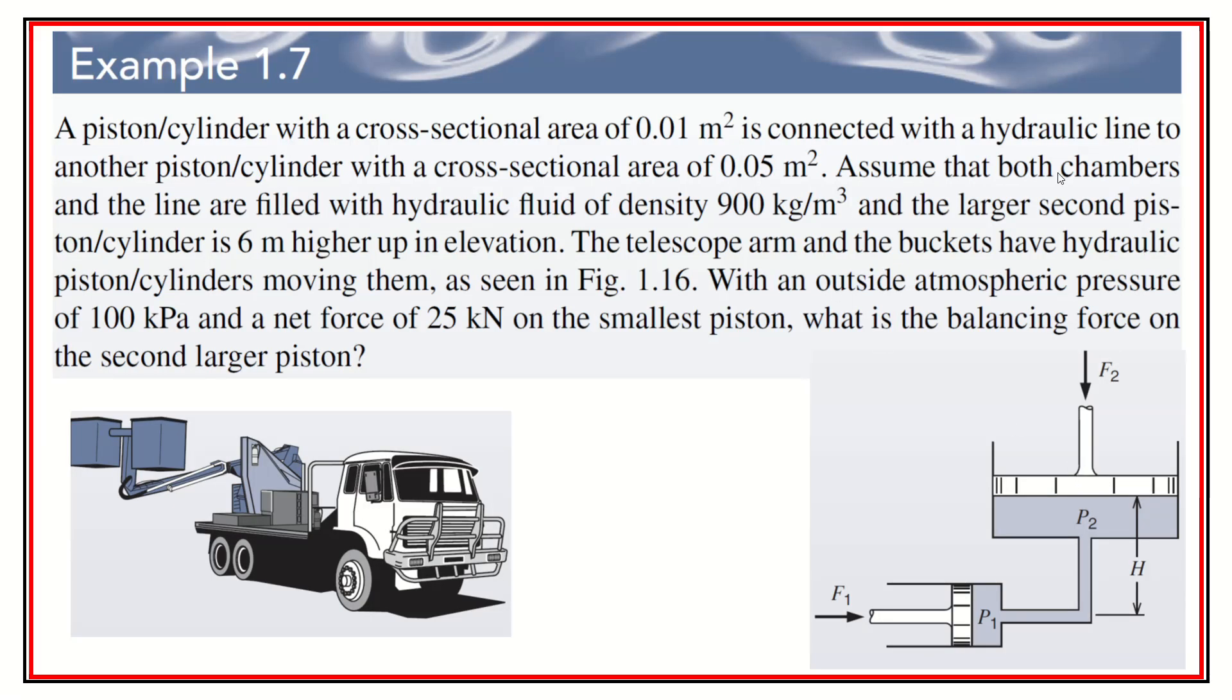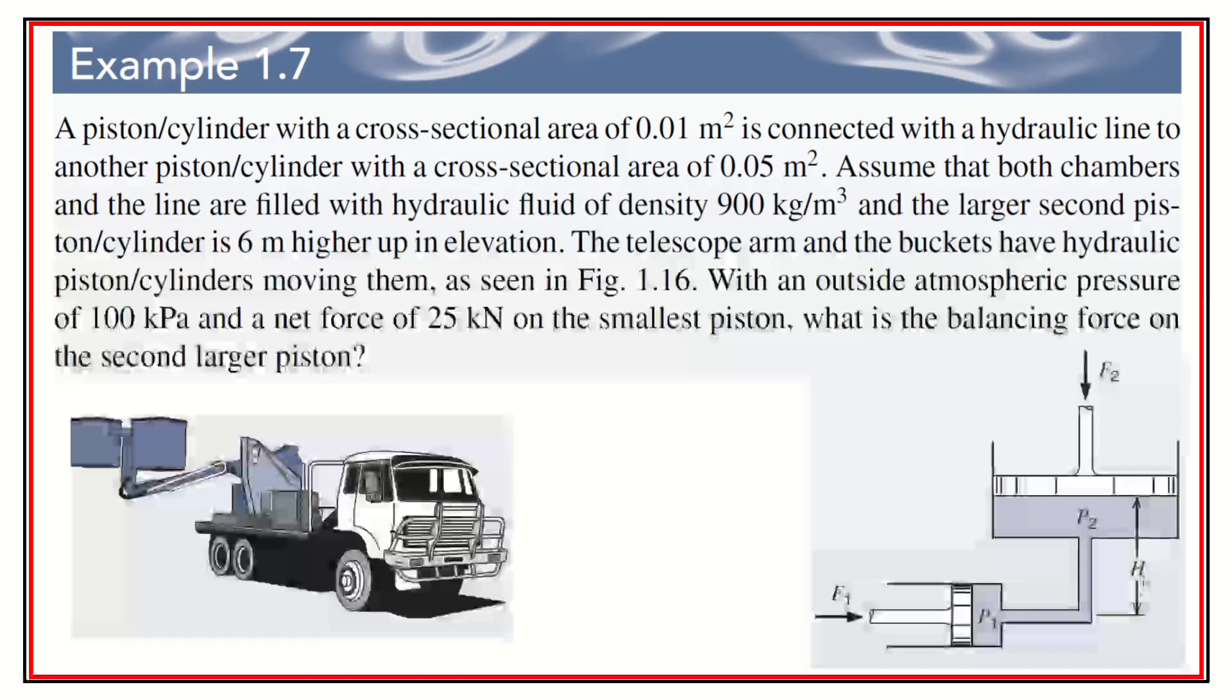Assume that both chambers in the line are filled with hydraulic fluid with a density of 900 kilograms per cubic meter, and what we have already known is that would be 1,000 if it was water. So this is lighter than water, less dense than water. Good thing to kind of think of and keep track. And the larger second piston cylinder is six meters higher in elevation right here.